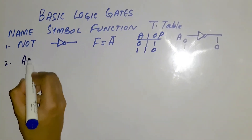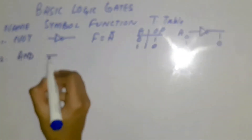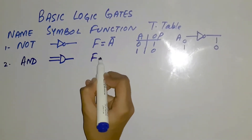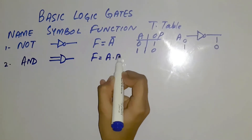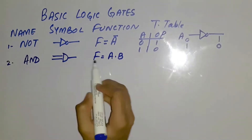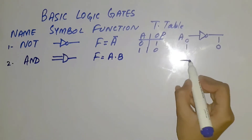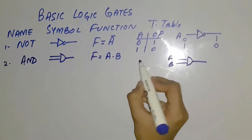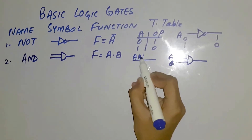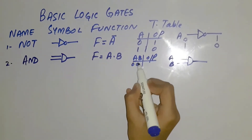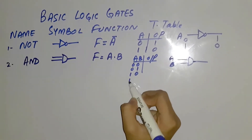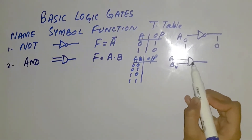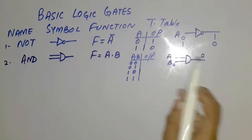Second, we have the AND gate. Its symbol is represented like this and its function f is represented by a dot b. AND is actually the multiplication of a and b. If we pass a and b through the AND gate, with values 0-0, 0-1, 1-0, and 1-1, if a and b both have value 0, after multiplication the output will have value 0.